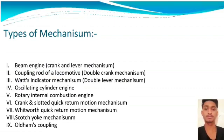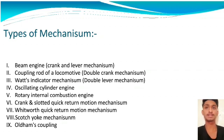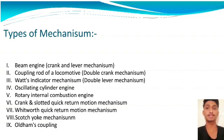Types of Mechanism: First, Beam Engine. Second, Coupling Rod of a Locomotive. Third, Watt Indicator Mechanism. Fourth, Oscillating Cylinder Engine. Fifth, Rotary Internal Combustion Engine. Sixth, Crank and Slotted Quick Return Motion Mechanism. Seventh, Scotch Yoke Mechanism. Eighth, Oldham Coupling.